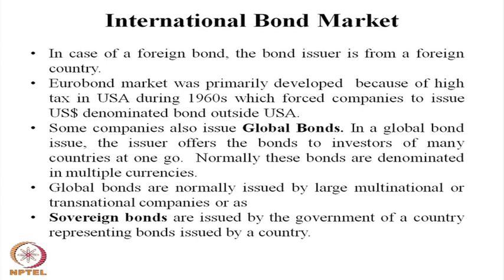Some companies also issued what is called a global bond. In a global bond, the issuer offers the bond not in one country or to a particular sector of investors, but in many countries at the same time. A global bond may take the form of a foreign bond or a euro bond, but is not confined to one country — it is spread across many countries simultaneously. These bonds are often denominated in multiple currencies, as companies want to raise different amounts in different currencies.